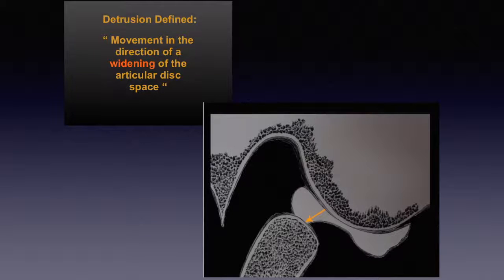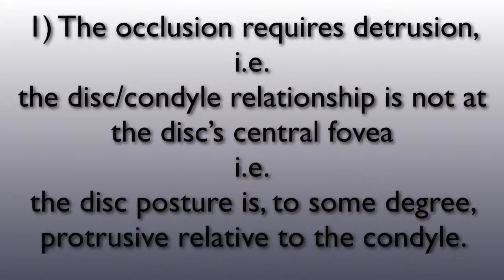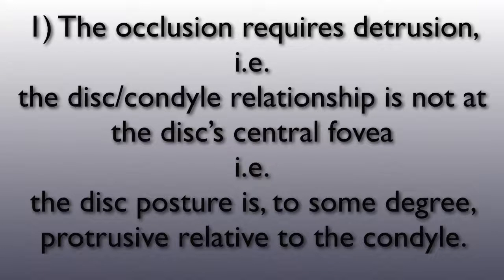The function of the disc is to be moved forward to occupy this required space, thus giving stability to the arc of closure to MI. Anterior displacement of the disc is usually caused by two things: occlusion and parafunctional activity. So the first risk factor for the disc becoming anteriorly displaced is an occlusion which requires detrusion — in other words, the condyle-disc relationship is not at the disc's central fovea, and the disc's posture is to some degree protrusive relative to the condyle.